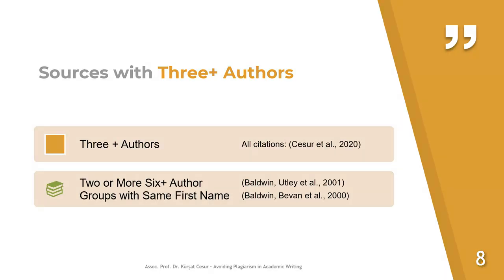What about sources with three or more authors? In APA 7, there was a change: previously you needed to list all author surnames on first mention, but after APA 7 you simply write the first author's surname followed by 'et al.' for the following authors. If two or more author groups share the same first author surname, then write the second author's surname to distinguish between the two sources.